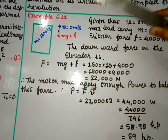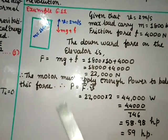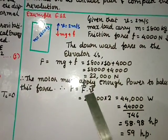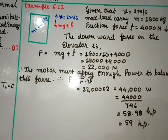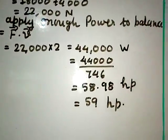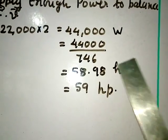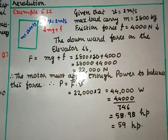The motor must apply enough power to balance the total downward force. Power P = F · v = 22000 × 2 = 44000 W. Converting to horsepower using 1 hp = 746 W: P = 44000/746 ≈ 58.98 hp, approximately 59 horsepower. That is the solution for example 6.11.